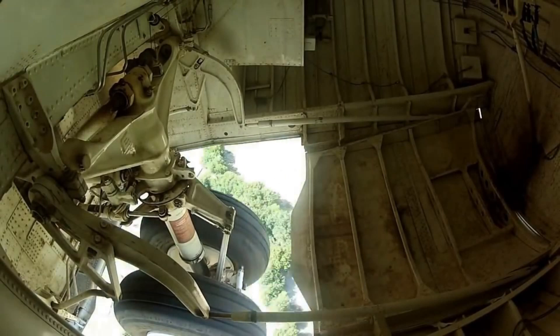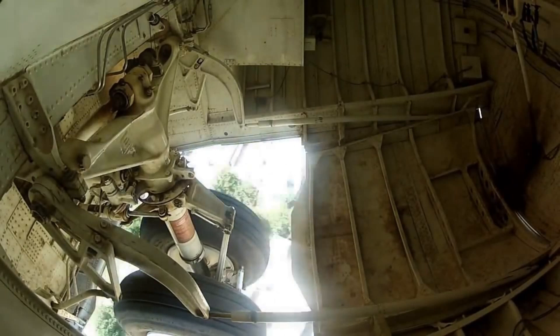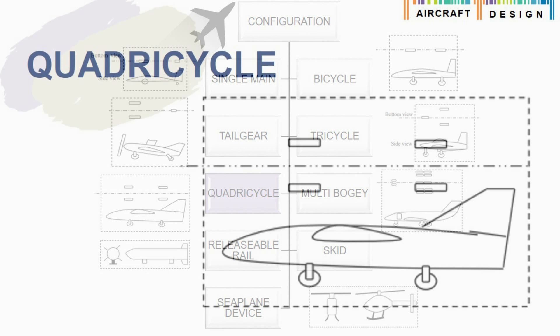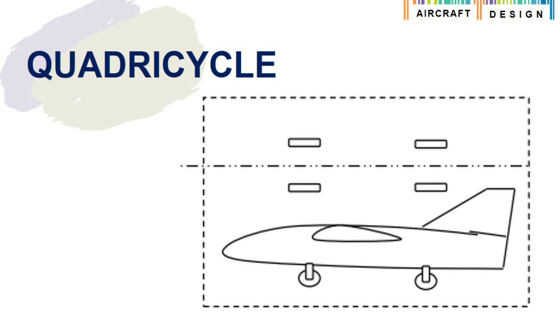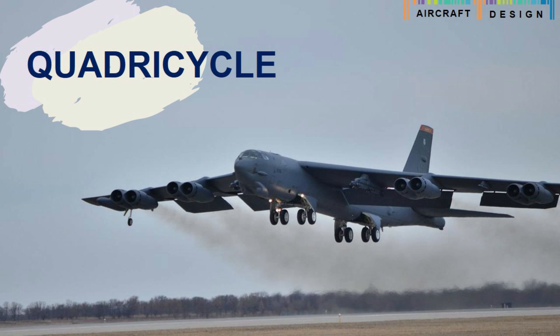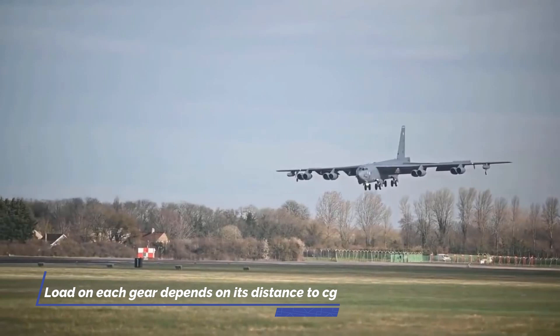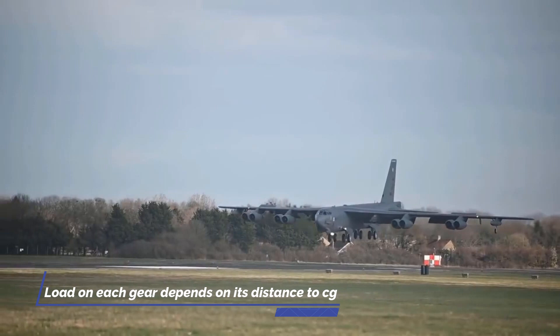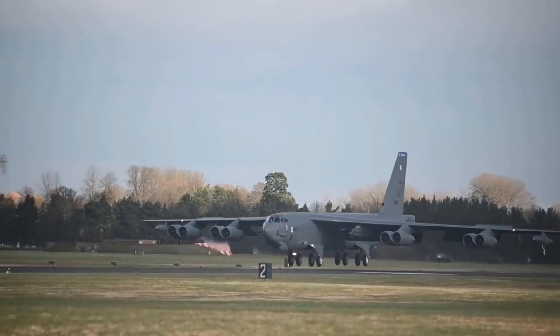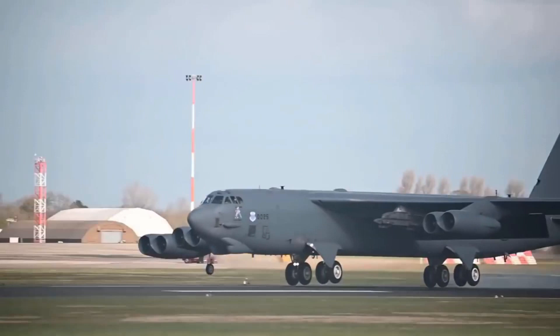Tricycle landing gear is observed in the Boeing 737, Airbus A320, and fighter aircraft like the F-16 Fighting Falcon and MiG-29. The quadricycle landing gear, as the name implies, utilizes four landing gears similar to a conventional car wheel system — two wheels on each side, with two in front of the aircraft's center of gravity and two aft. The loads acting on each gear depend on its distance to the center of gravity. This configuration enables a low floor for easy loading and unloading. For example, the Boeing B-52 utilizes a quadricycle landing gear.